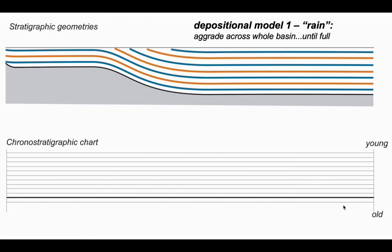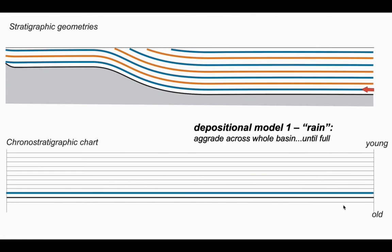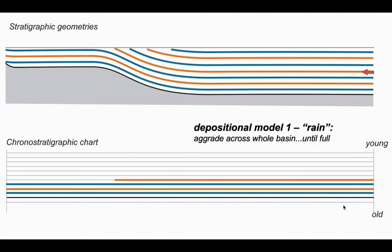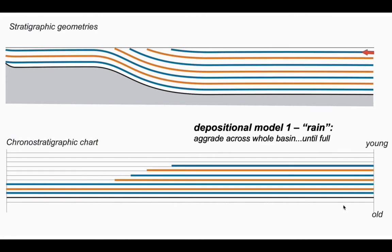We'll plot the spatial distribution of these layers on our chronostratigraphic chart, starting with the oldest, tracked by a red arrow on the right hand side of the strata geometry diagram. The first three layers are deposited across the entire width of the basin floor. But the orange horizon and subsequent blue, orange, and blue horizons are restricted to the right hand side as the basin fills up.